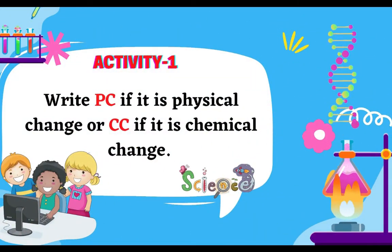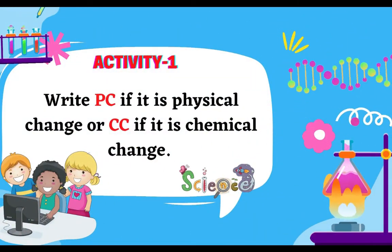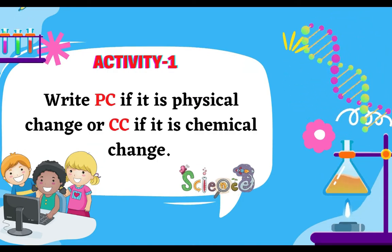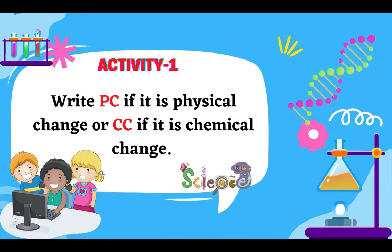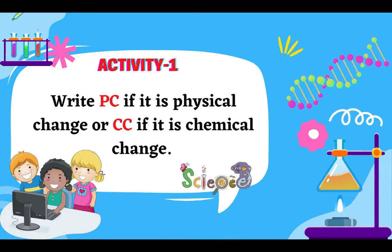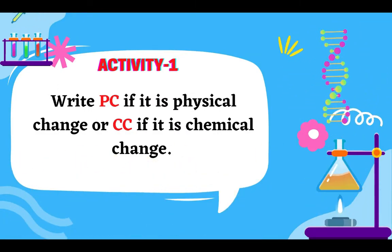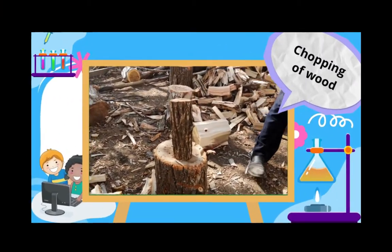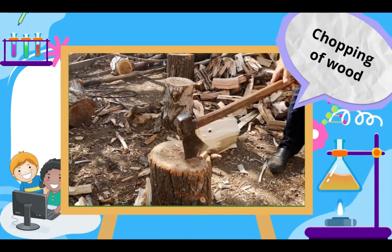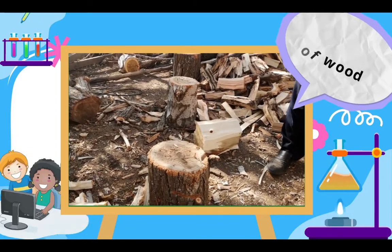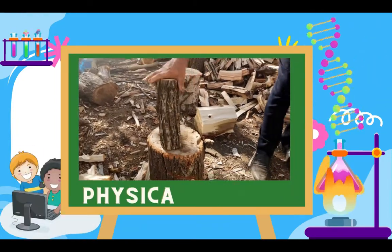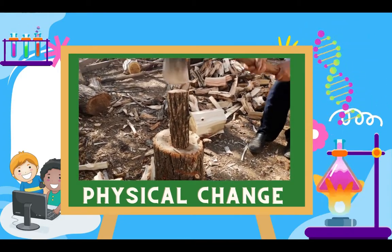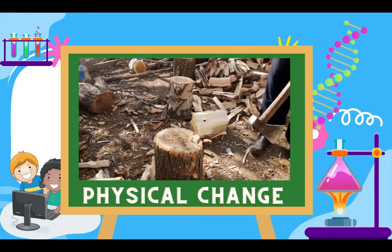Have you answered all the items correctly? Very good. Now let us proceed to activity number one. Write PC if it is physical change or CC if it is chemical change. Chopping of wood — physical or chemical change? Very good, that is physical change.